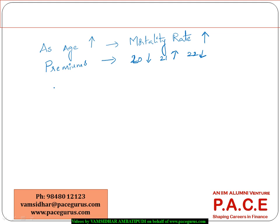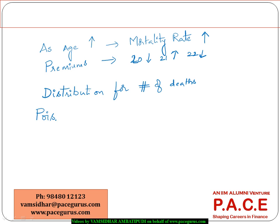Now I can look out for distributions for the number of deaths. I would like to look at the distribution for the number of deaths — if I have to apply all these things and I am looking at the smoothening process, I can create a distribution for the number of deaths. One way is I can assume that the number of deaths follow a Poisson distribution. I am trying to create a distribution to smoothen out, apart from the crude rates. Based on the crude rates, I am trying to find out a distribution for the number of deaths. So if I am assuming a Poisson model, the distribution for the number of deaths at age x follows a Poisson distribution.